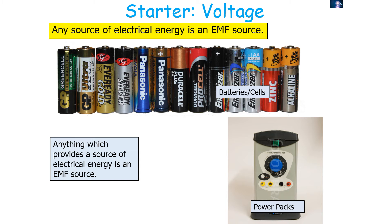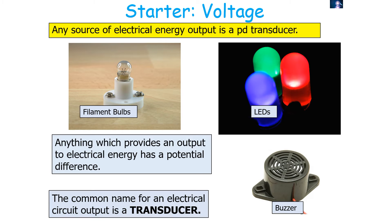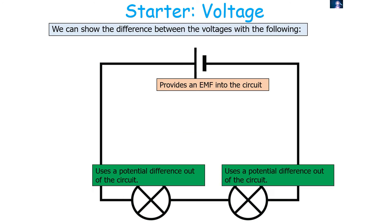Any source of electrical energy is an EMF source — things like batteries, cells, and power packs. Any source of electrical energy output is a potential difference transducer. So anything that provides an output of electrical energy has a potential difference, and the common name for these electrical circuit outputs is a transducer. You can see that a battery provides an EMF into the circuit, and bulbs have a potential difference out of the circuit.